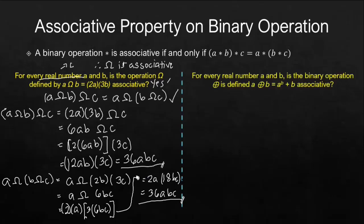Next part, we have the second example. This time, we have a different binary operation. We have a circle with a cross in it defined by A to the B plus B. We have to think if this is associative. You may pause this video and try proving if this is really associative using the first example as your guide. After 10 seconds, we will resume this discussion.